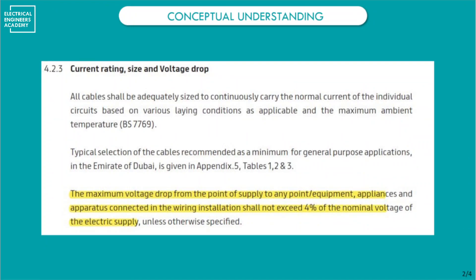What is our limitation for voltage drop? Referring to local regulations — DEWA in our case — section 4.2.3 states that the maximum voltage drop from the point of supply to any equipment, appliances, or apparatus connected in the wiring installation shall not exceed four percent of the nominal supply voltage. So the total voltage drop from the transformer low-voltage side to the final outlet or light fitting should be less than four percent.